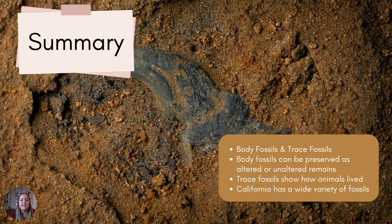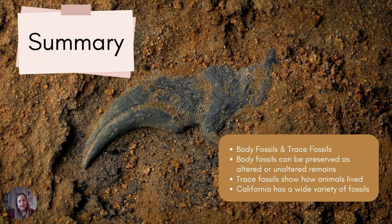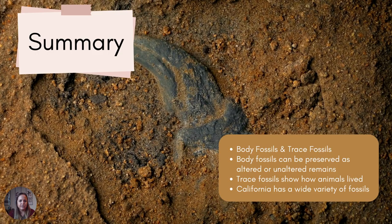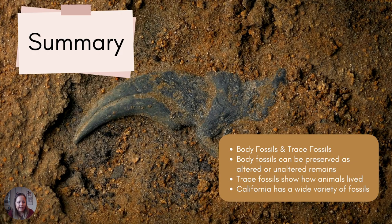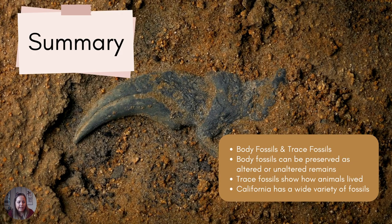What we learned in this lecture was body fossils and trace fossils. Remember, body fossils are the actual preserved remains of the skeletal materials — either altered or unaltered. Trace fossils are traces of the organisms and can show us how they lived or what they ate. We also see a pretty wide variety of different types of fossils in California. I will see you guys in the next lecture. Bye.